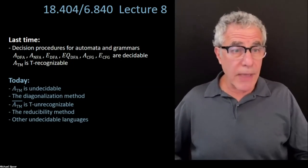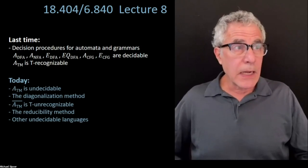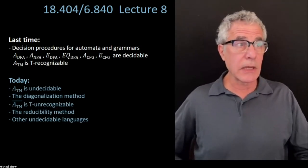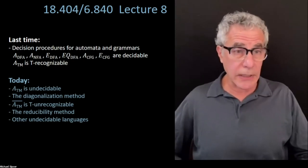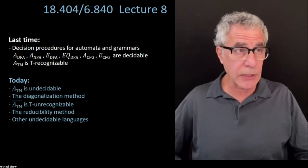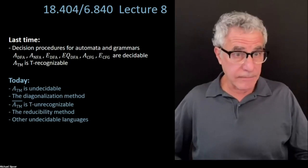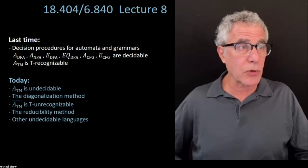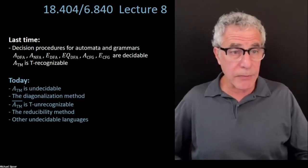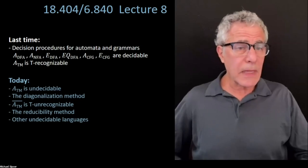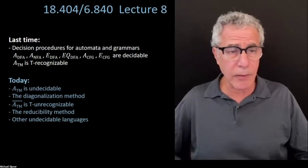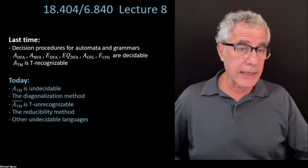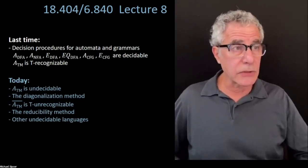Today's plan is proving ATM is undecidable using the diagonalization method. I'll also show the complement of ATM is Turing unrecognizable — even though ATM itself is recognizable, its complement is not. Then we'll introduce the reducibility method for showing other problems are not decidable, and give one example assuming we have time. If not, we'll delay that until next Tuesday's lecture.